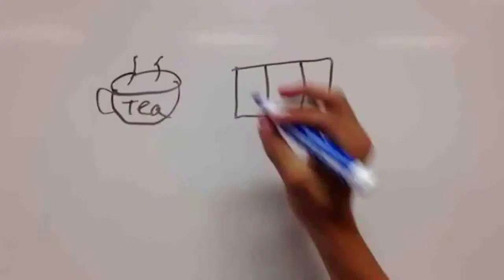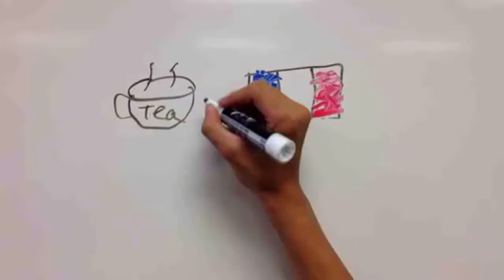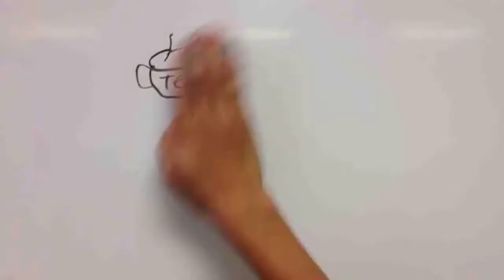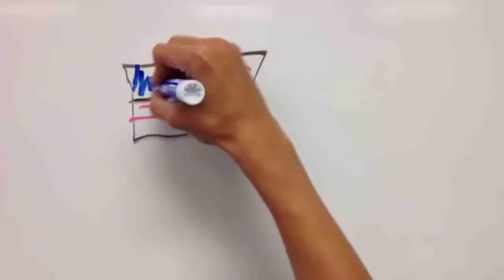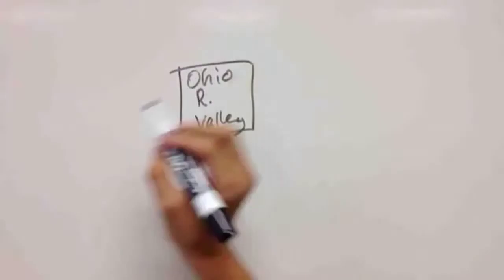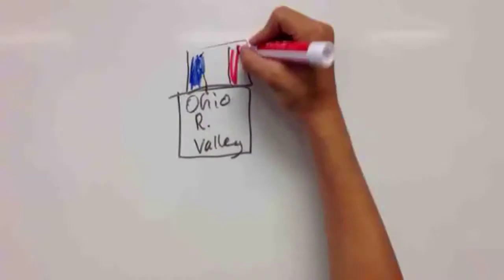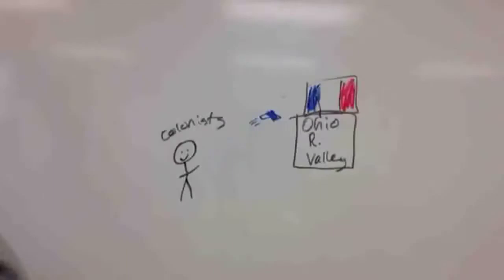In the 1700s, the Ohio River Valley caused mass conflict between these groups. King George's War sparked the revolution which was also caused by this land. The Ohio River Valley was owned by the French until the colonists took it away during this war.